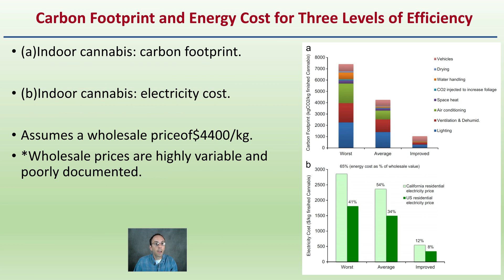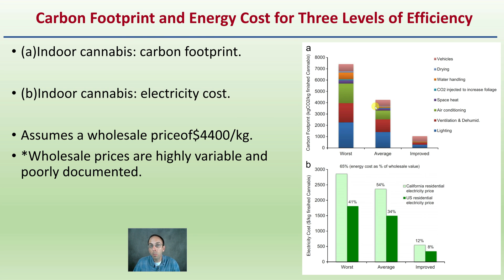We're looking at the carbon footprint and energy cost at three levels of efficiency for indoor cannabis. The worst conditions are the least efficient, average represents a typical cannabis facility, and improved conditions use more efficient operations — which may come with more upfront costs but hopefully long-term cost reduction. This assumes a wholesale price of $4,400 per kilogram, though keep in mind wholesale prices are highly variable and poorly documented. There is variation, but indoor cannabis production is still consuming a significant amount of energy overall.